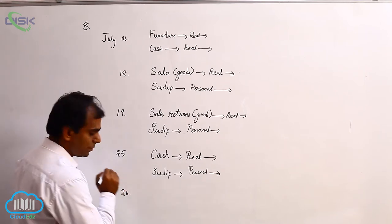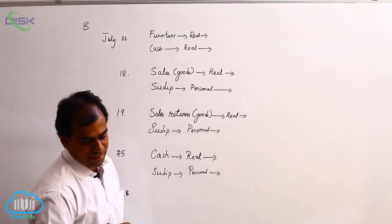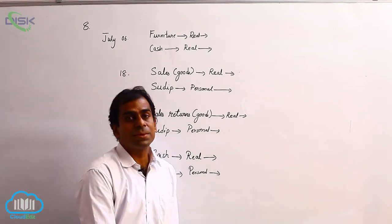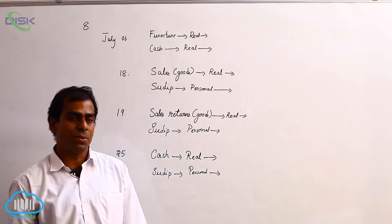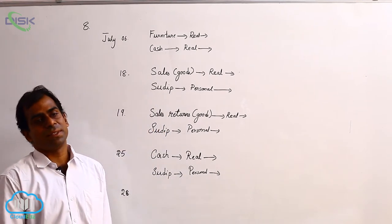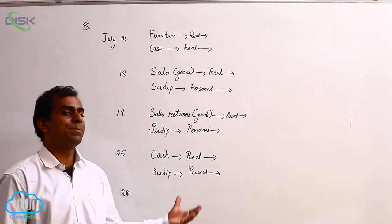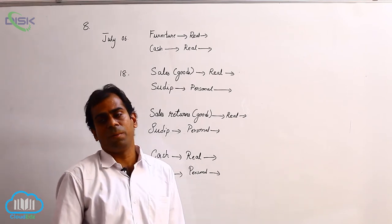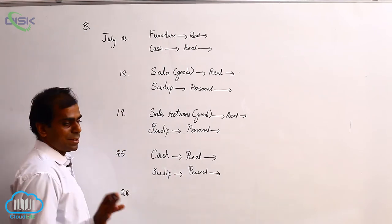Now the last transaction is on 28th. It states that goods taken by Sudip and company for domestic use. Domestic use is nothing but personal use, wherein some resources of the business are taken home and used for personal purpose. So the business is losing such resources.